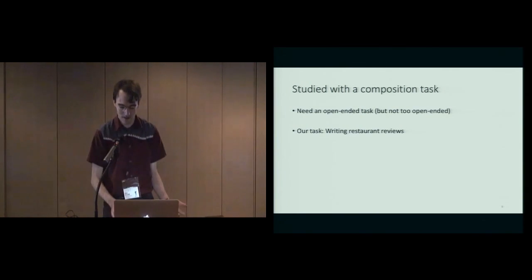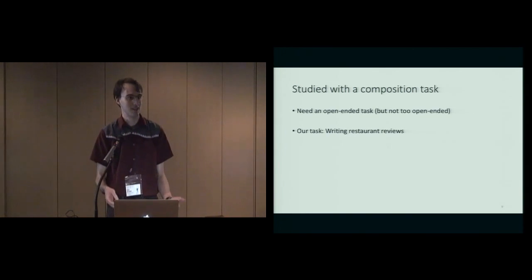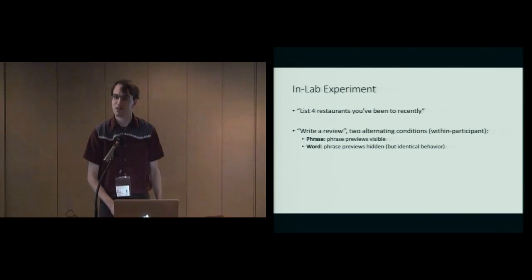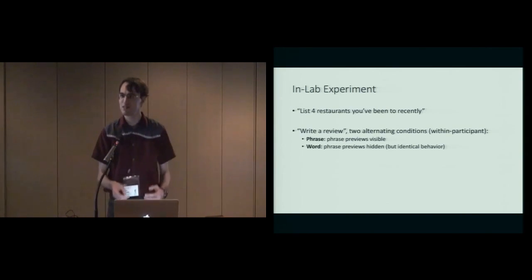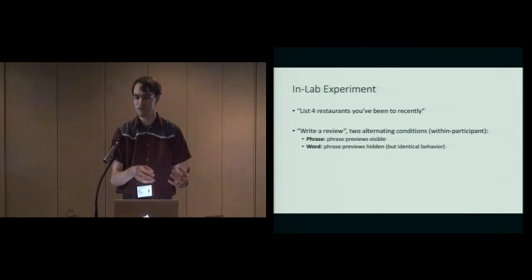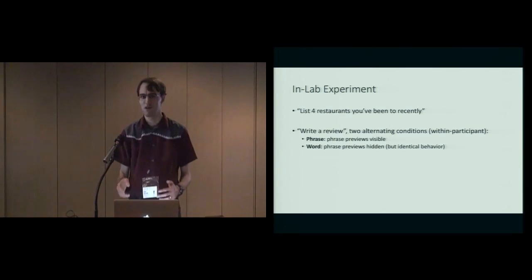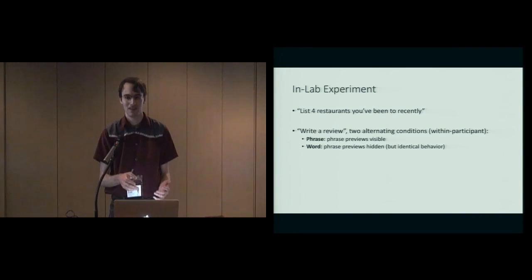We chose to have people write restaurant reviews, which is an open-ended task, short, and something that people often actually do on their mobile phones. With the abundant collection of restaurant reviews that we can get from Yelp, we can actually generate useful phrases to suggest in this domain. We ran an in-lab experiment where we had people list four restaurants that they've been to recently, and the system would guide them through writing a review of each one. They alternated between two conditions for a within-participants design.